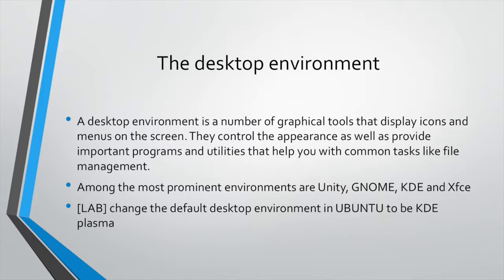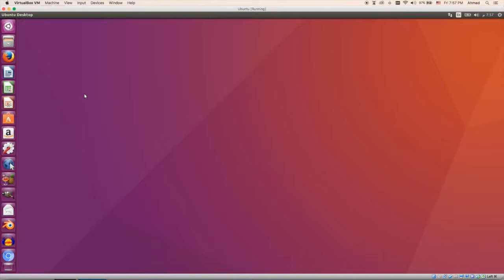First of all, let's briefly discuss the desktop environment. A desktop environment is defined as tools that display icons and menus on the screen. They control the appearance and provide important programs and utilities to help you with common tasks like file management. This is our example system — Ubuntu — and this is what I mean by a desktop environment.